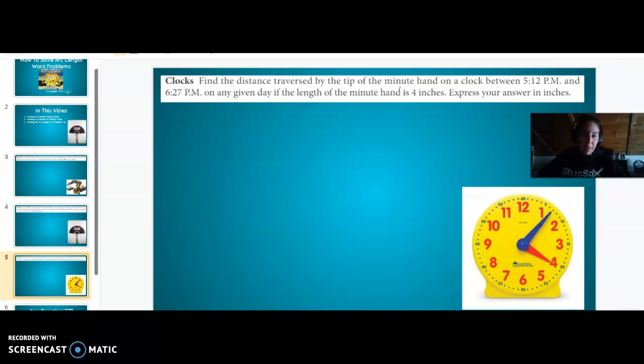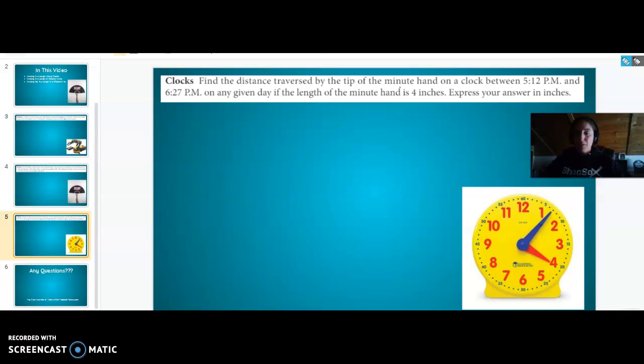Our last example, we're going to do a decent amount of work on because this is a real thinky kind of example. Find the distance traversed by the tip of the minute hand on a clock between 5:12 PM and 6:27 PM on any given day. We still need our arc length equals 2πr times θ over 360. What do we need? We need a radius and we need a θ. The minute hand is 4 inches. So our radius will be 4. But we still need to figure out our θ.